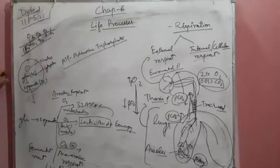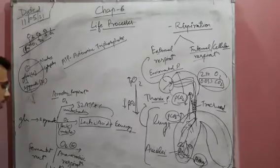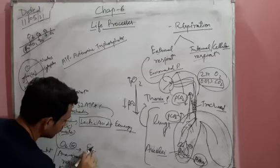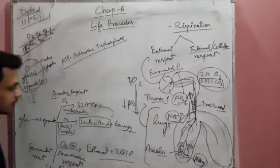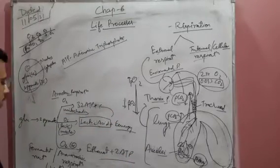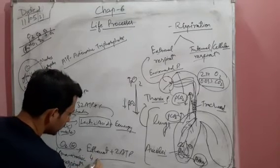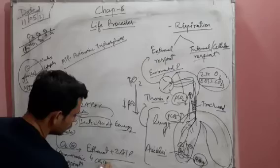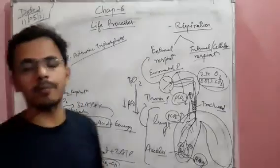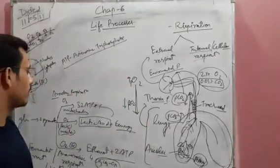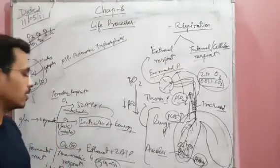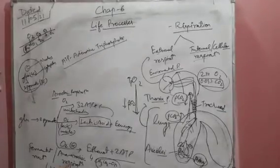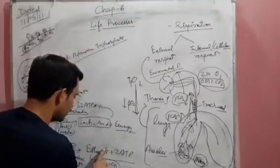Fermentation reaction means the reaction that takes place in the absence of oxygen. In yeast, it forms ethanol plus two ATP molecules. Ethanol — CH3CH2OH — is an alcoholic compound. When making beer, wine, or other beverages, the fermentation reaction takes place with the help of yeast, which converts the substrate into ethanol.